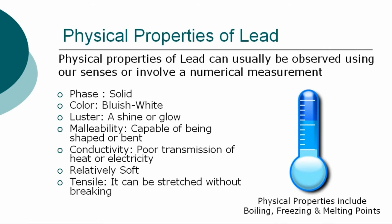The more specific physical properties of lead can usually be observed using our senses or involve a numerical measurement, such as determining its boiling, freezing, and melting points. The physical properties of lead are: Color — bluish-white; Luster — exhibits a shine; Malleability — capable of being shaped or bent; Conductivity — relatively poor transmission of heat or electricity; Lead is relatively soft; Tensile — it can be stretched without breaking.